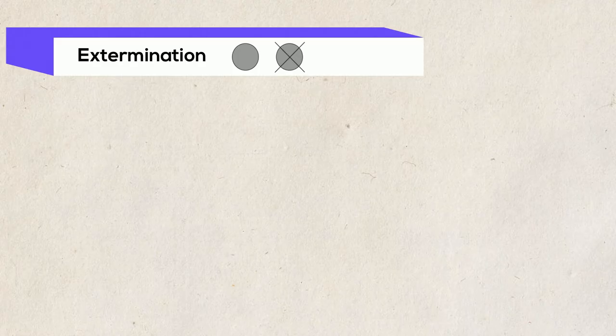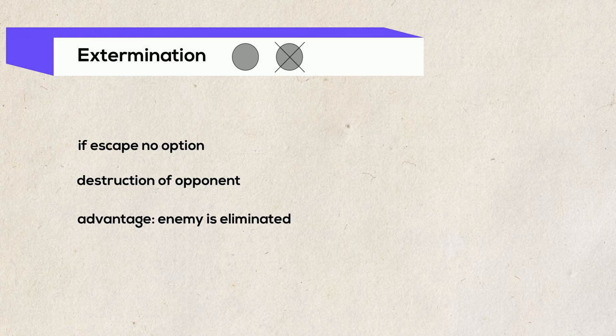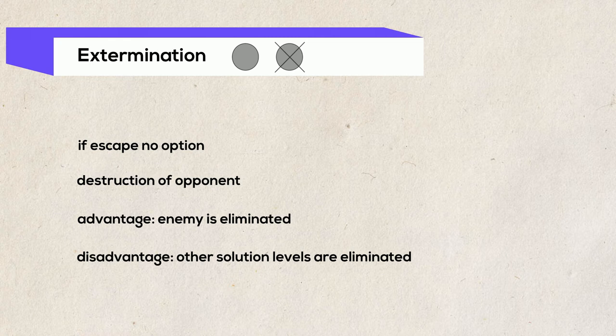If escape is no longer a viable option, a fight breaks out between the opponents. In the course of this struggle, both opponents try to destroy each other. The advantage of the extermination variant is undeniably that it permanently eliminates the enemy. The disadvantage, however, is that with the demise of the opponent, all other solution levers are eliminated at the same time.